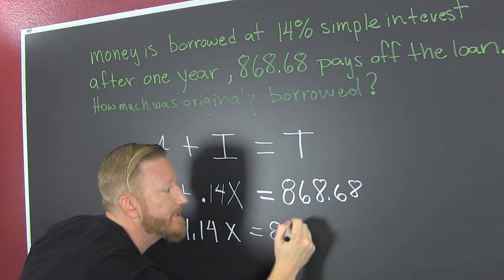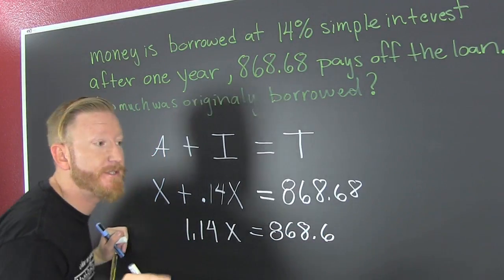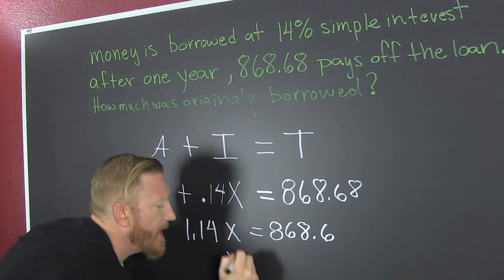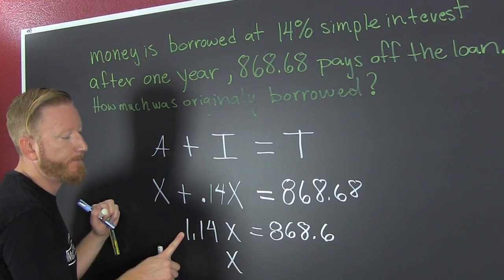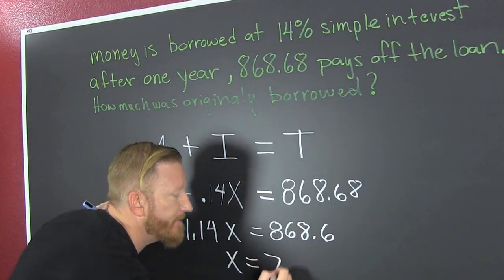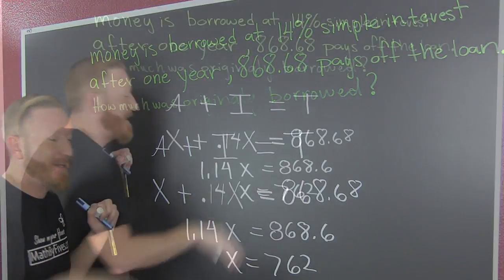That's equal to 868.68. We're almost done. So then our X turns out to be, when we divide both sides by 1.14, we get 762. I did it in my head.